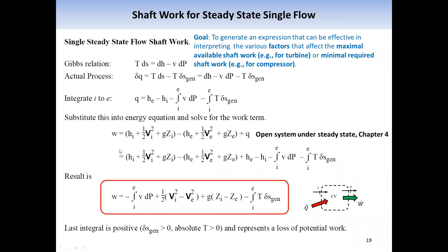Then separately, from Chapter 4, for an open system, fluid operated under steady state can be expressed in this equation. In this equation, it involves work, heat transfer, enthalpy, kinetic energy, and potential energy differences. Then if we substitute this Q term here, we get this expression. Then eliminating the enthalpy terms and combining the kinetic energy and the potential energy terms, we get this equation.